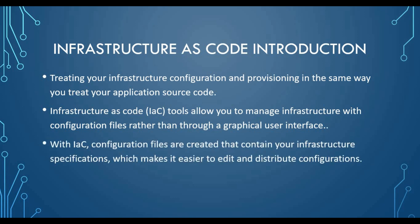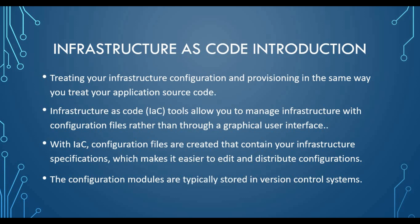The IAC configuration files contain your infrastructure specification, which makes it easier to edit and distribute the configuration. Once you have your infrastructure as code configuration files for a specific setup, next time someone needs it they don't have to manually do it — just run the code again. You can save it in your Git repository or any other version control system like Subversion, and these modules can be stored and distributed to others.